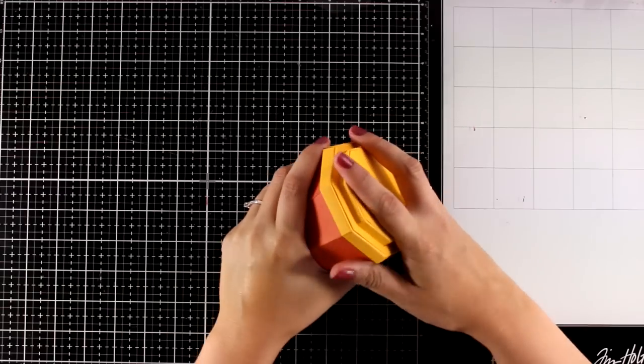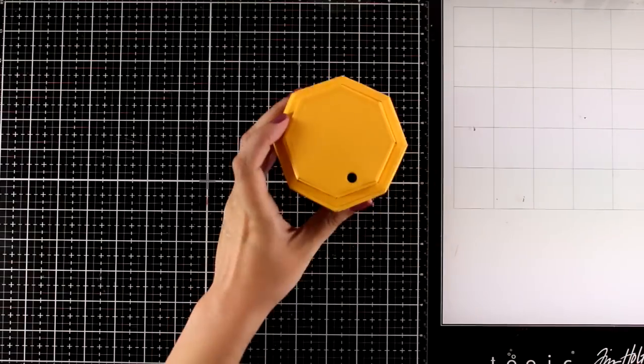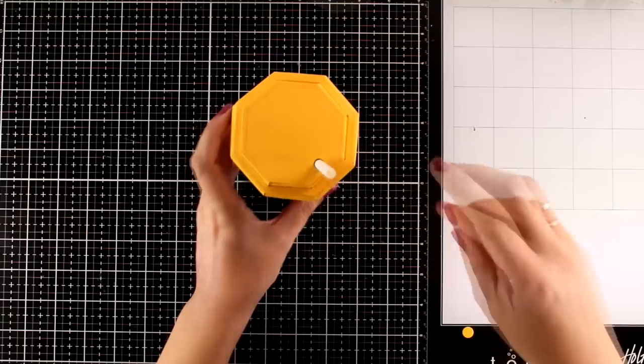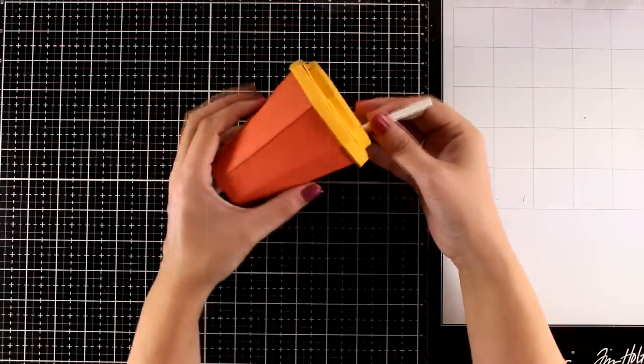So everything is ready now. Just put the lid on top of your cup. Add your treats inside. A little straw just for the fun of it. And now you can decorate the outside.